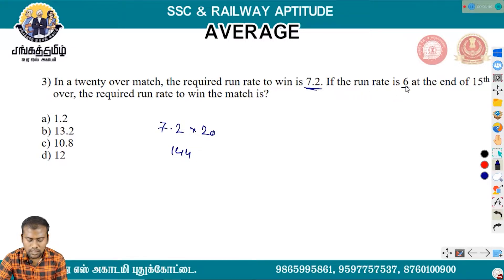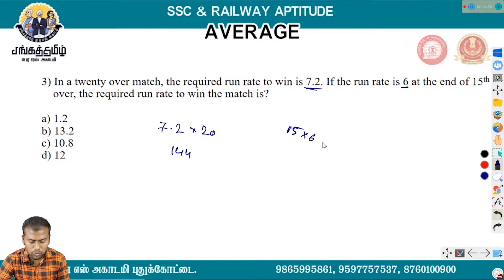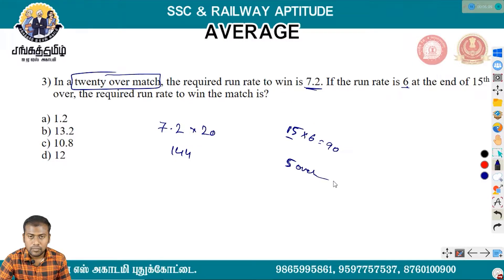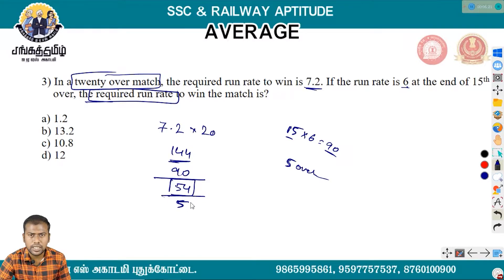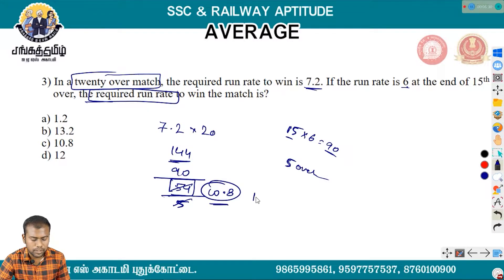If the run rate is 6 at the end of the 15th over, the average of 15 overs is 6, so the total runs after 15 overs is 90. The required average of the remaining overs is 10.8.